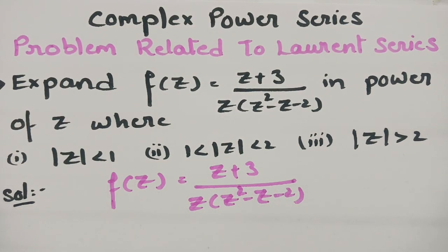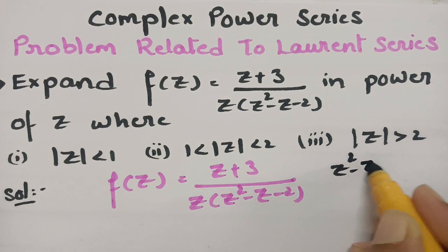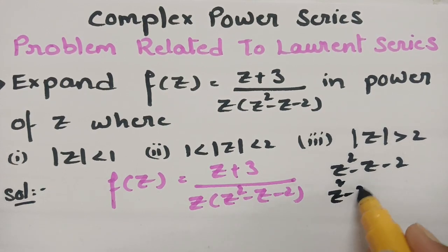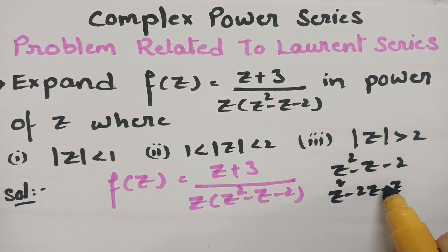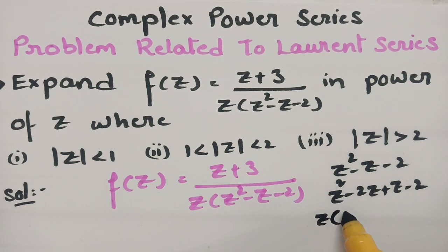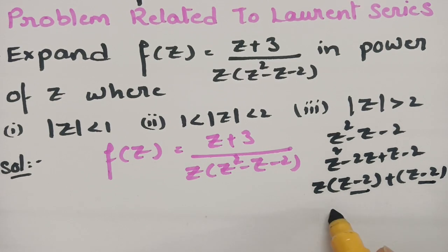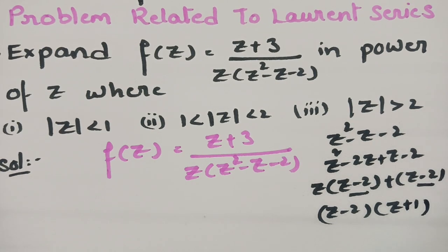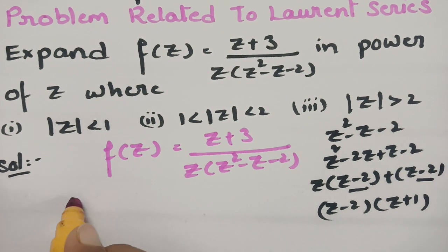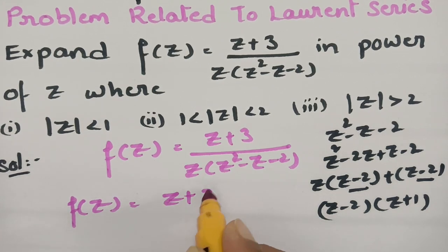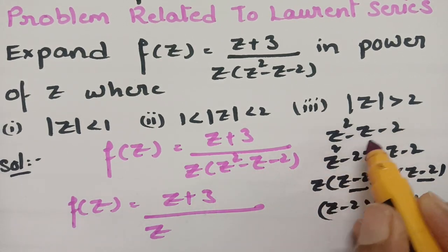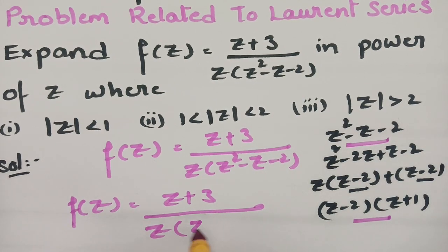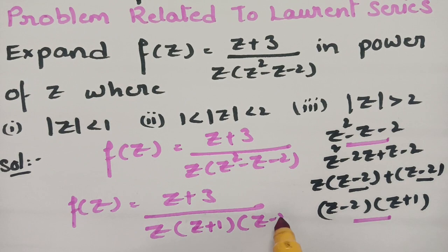Before resolving into partial fractions, I will find the factors for z²-z-2. This can be written as z²-2z+z-2, and taking z common gives z(z-2) + (z-2), so factoring out (z-2) gives (z+1)(z-2). Therefore f(z) = (z+3) / [z(z+1)(z-2)].